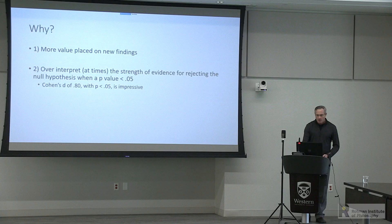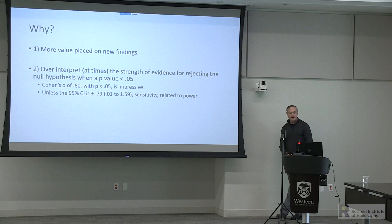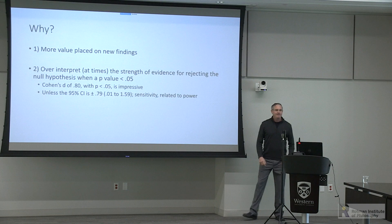A Cohen's D of 0.80 is a large effect size — very impressive — unless the sensitivity of that effect ranges from 0.01 to 1.59. You'll see findings in the published literature like this: a large effect size is discussed, but if you look at the confidence interval around those effect sizes with fairly low N, the effect could be absolutely trivial and near zero, or one of the largest effects ever seen in social psychology.